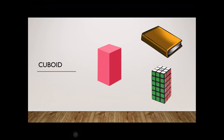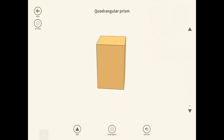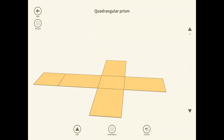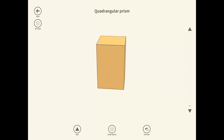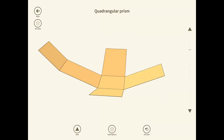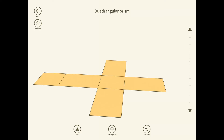Now let's talk about a cuboid. Cuboids are relatively easier to find, so if you have something around you that looks like a cuboid, pause this video and get a hold of it. Here as you can see we have a cuboid. Again I'm going to open this up just to see what we get. As you can see, we get six rectangles. Let's examine these rectangles one by one and see what the formula for the total surface area of a cuboid is.